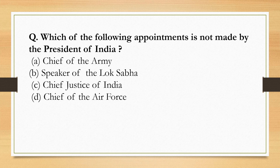Which of the following appointments is not made by the President of India? The Chief of the Army, Chief Justice of India, and Chief of the Air Force are all appointed by the President. However, the Speaker of the Lok Sabha is not appointed by the President — he or she is elected by the members of the Lok Sabha. So the correct option is Option B.